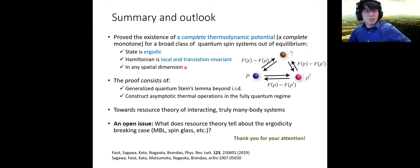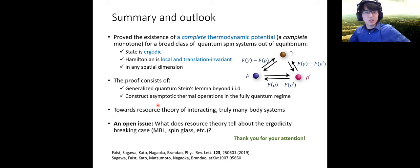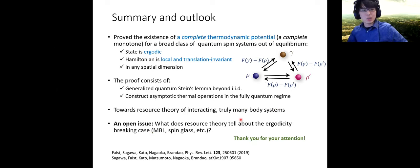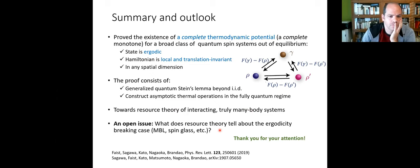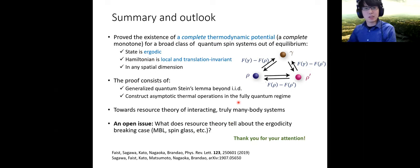To summarize: we have proved the existence of a complete thermodynamic potential — also called a complete monotone in the context of resource theory — for a broad class of quantum spin systems out of equilibrium. The assumption is that the state is ergodic and the Hamiltonian is local and translation invariant, with arbitrary spatial dimension. Our proof consists of a generalized quantum Stein's lemma beyond IID situations, and we have constructed asymptotic thermal operations in the fully quantum regime. This is an important step towards resource theory of interacting many-body systems. Open questions include what resource theory tells us about ergodicity-breaking cases like many-body localization or spin glass. Thank you for your attention.